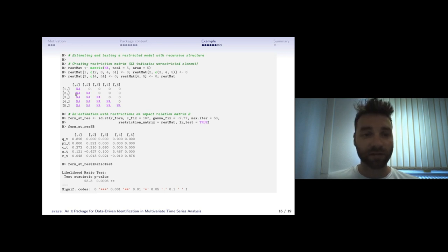The zeros represent the restrictions, NA are unrestricted elements. We can re-estimate the whole model but with passing the restriction matrix to the function.